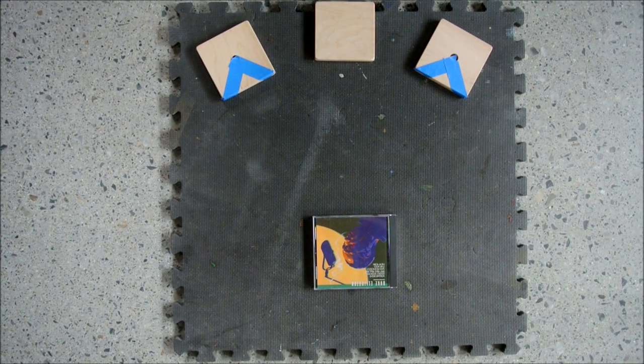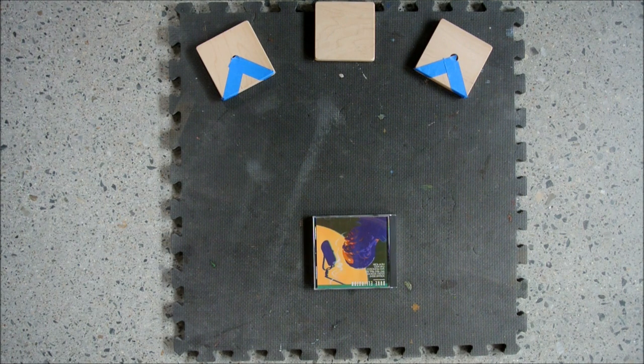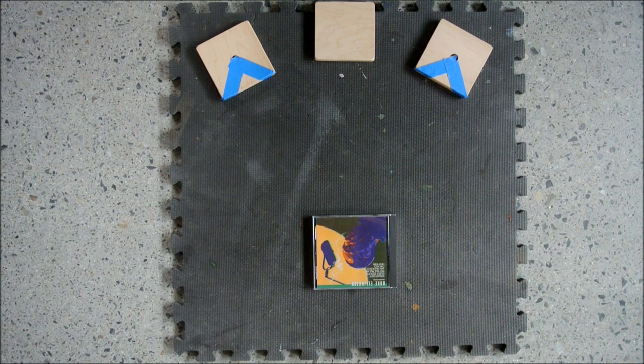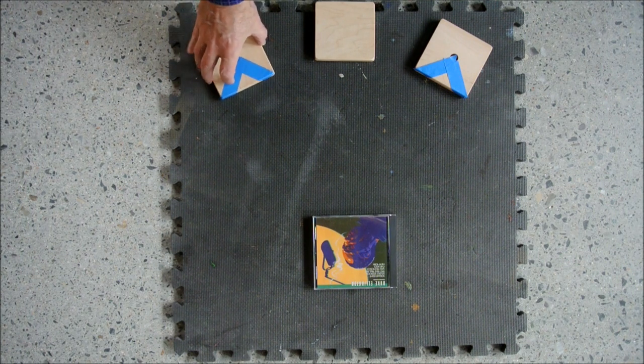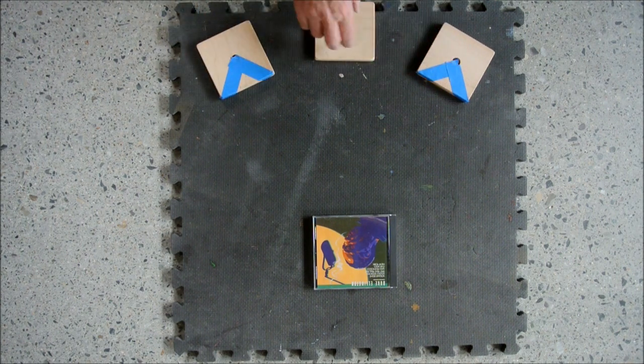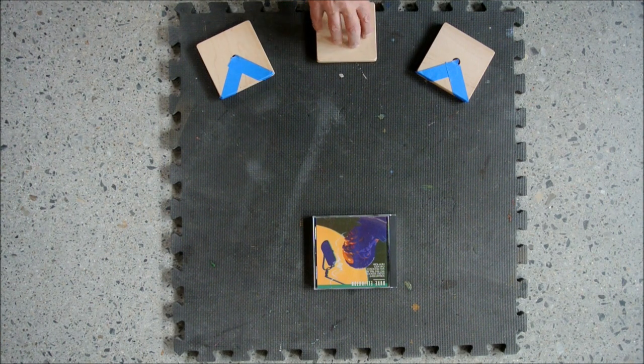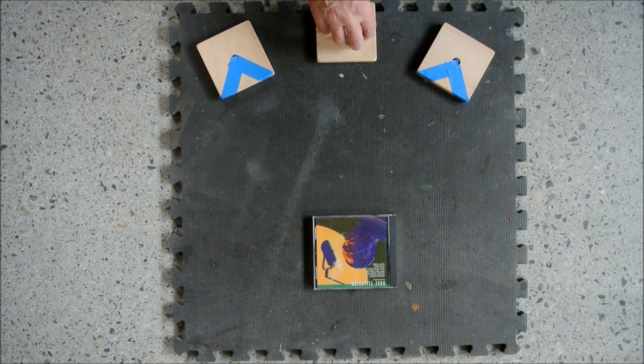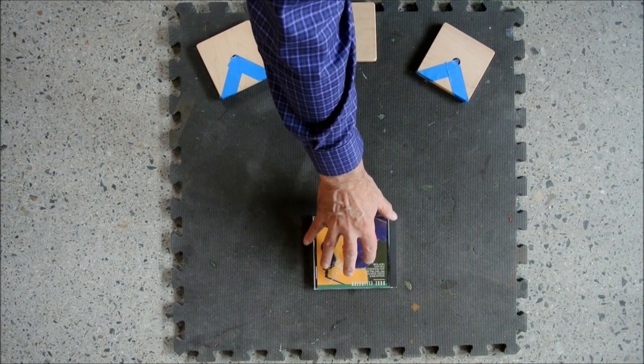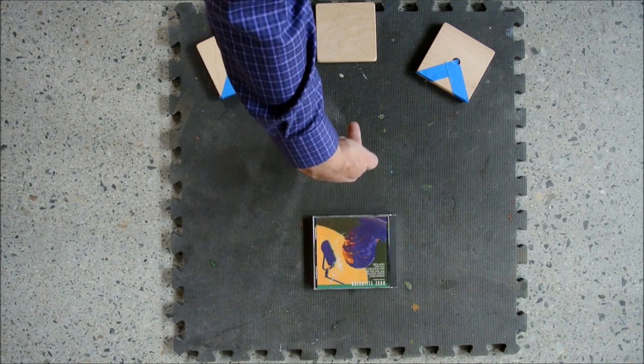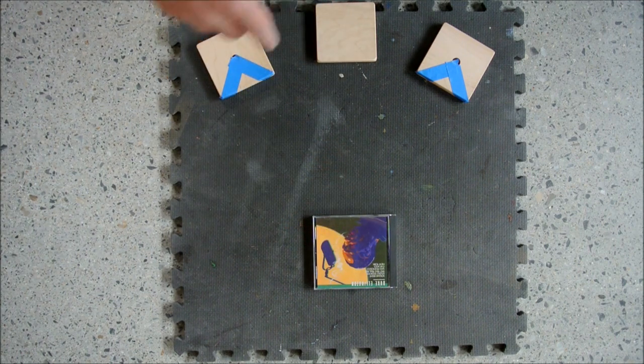This is a simplified representation of my listening room. Where this is a speaker, and this is a speaker. This is the bureau that I have the amp and preamp and other electronics on. And, this is my listening chair here, facing so I sit facing the speakers, obviously.